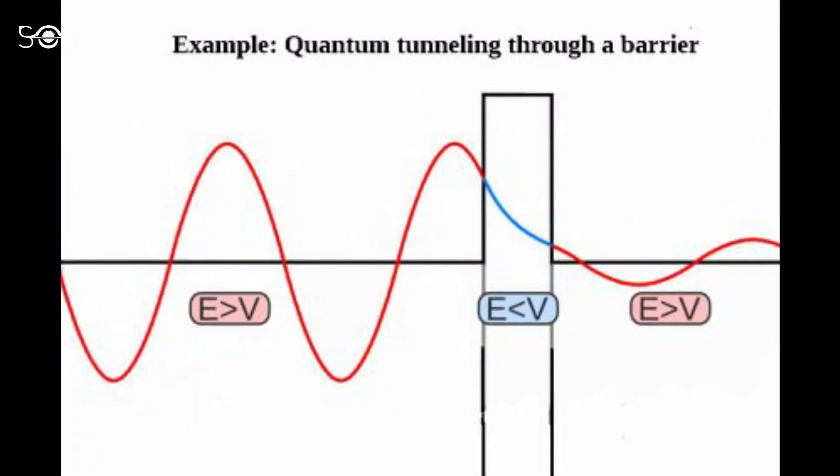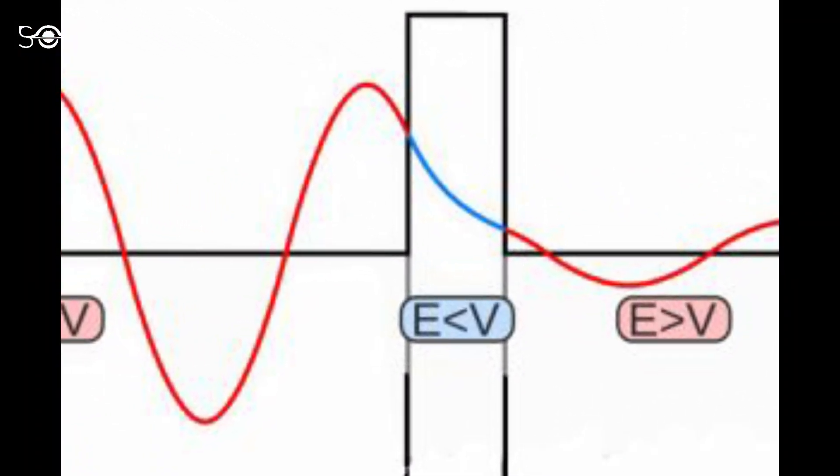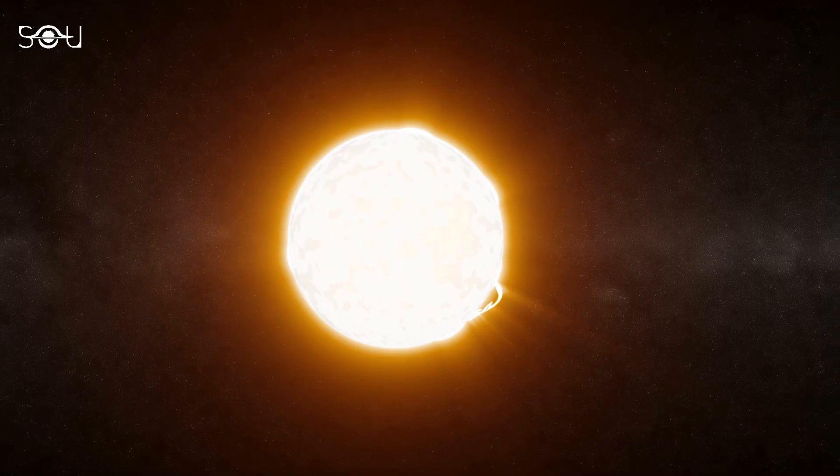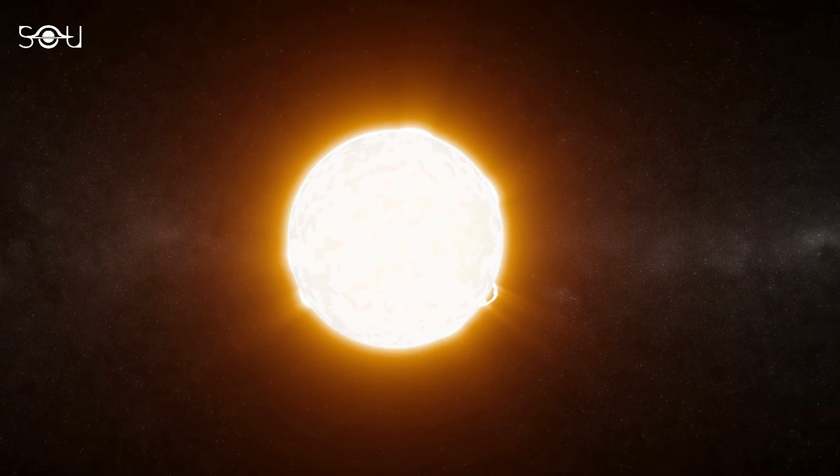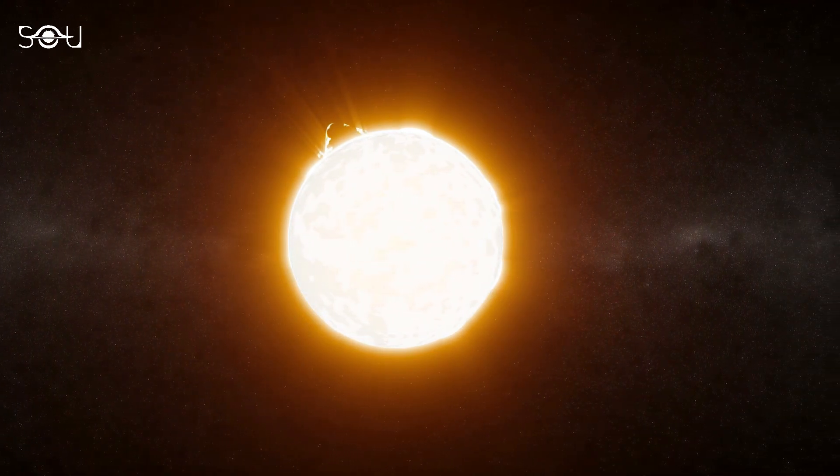Technically speaking, a subatomic particle can pass through the potential barrier greater than its energy. Fun fact, this is the reason behind our existence. It is the basic principle involved in the production of nuclear energy in the core of the sun.